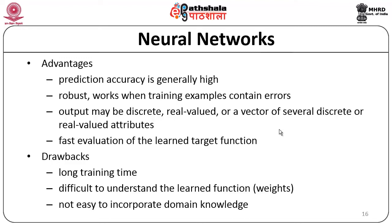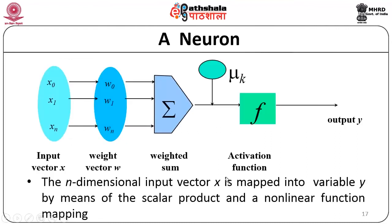What are the advantages of neural networks? The prediction accuracy is generally high, and neural networks are robust with respect to errors. Outputs can be discrete, real-valued, or sometimes even vectors. Evaluation speed during inference is very fast. On the other side, neural networks take more time for the purpose of learning (training), it is difficult to understand the learned functions, and it is not easy to incorporate domain knowledge.